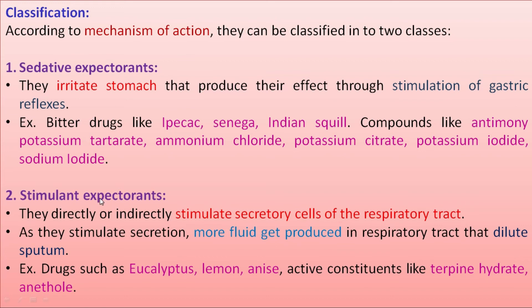Stimulant expectorants can act directly or indirectly. They stimulate the secretory cells of the respiratory tract, causing more fluid to be produced, which dilutes the sputum so that the diluted sputum is expelled through the respiratory tract. Examples include drugs like eucalyptus, lemon, and anise, as well as active constituents like terpene hydrate and anethol, which also act as stimulant expectorants.